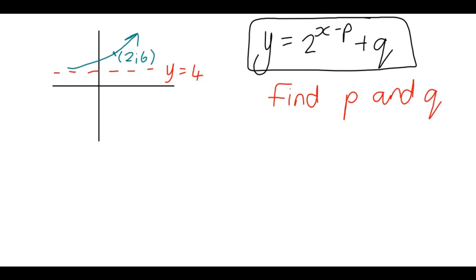Now we see that q, that's easy. q is the horizontal asymptote, so q is the y value, so y equals q equals 4 is the horizontal asymptote.